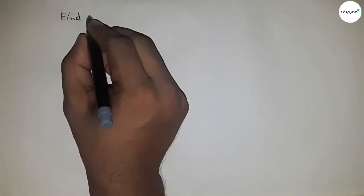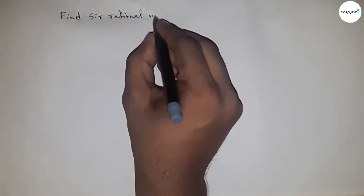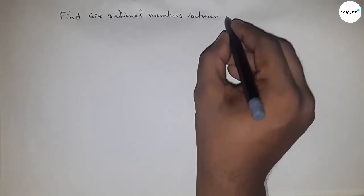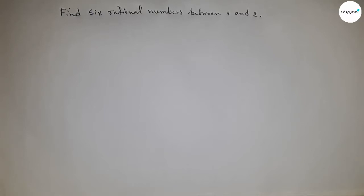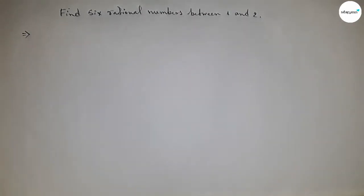Hi everyone, welcome to SSR classes. Today we have to find six rational numbers between one and two. So let's start. First of all, write down here the given numbers.